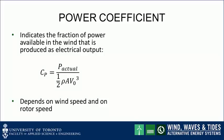The most important measure of wind turbine performance is the power coefficient. The power coefficient indicates the fraction of power available in the wind that is produced as electrical output. In the equation, the numerator, p-actual, is the actual electrical output produced by the wind turbine, while the denominator contains the very familiar one-half rho A v-cubed, which represents the power available in the upstream wind.